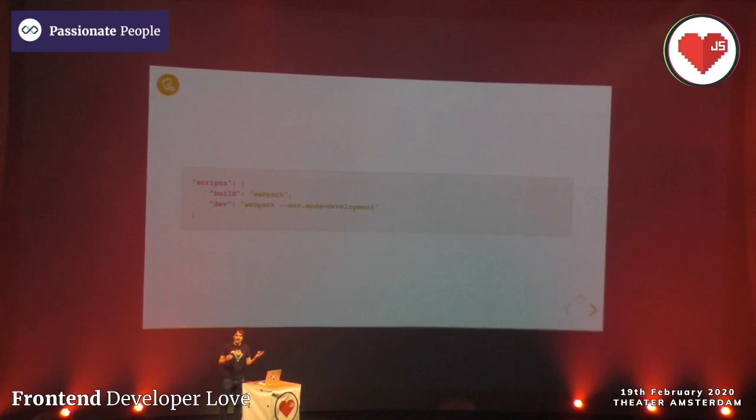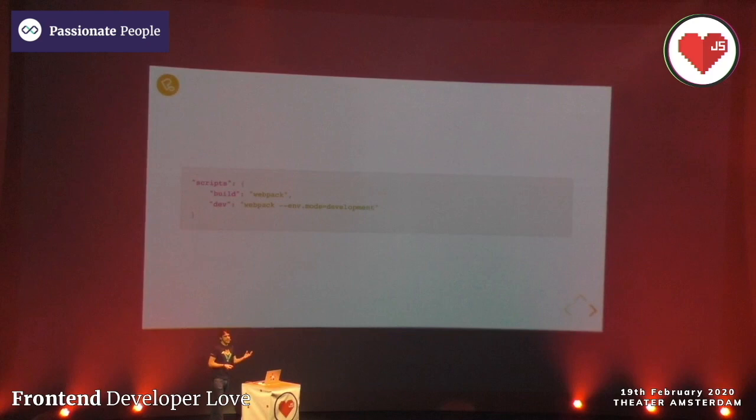Now we can add two scripts to our package.json: one is the build script for a production build - we don't pass in any env so it defaults to production - and the dev script will start webpack in development mode.